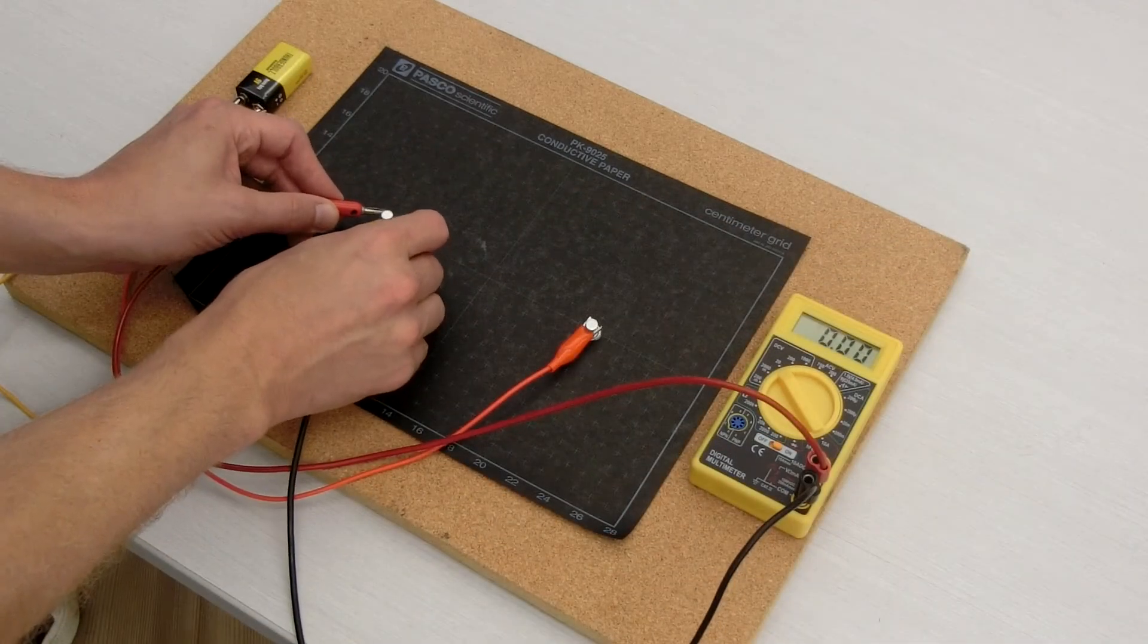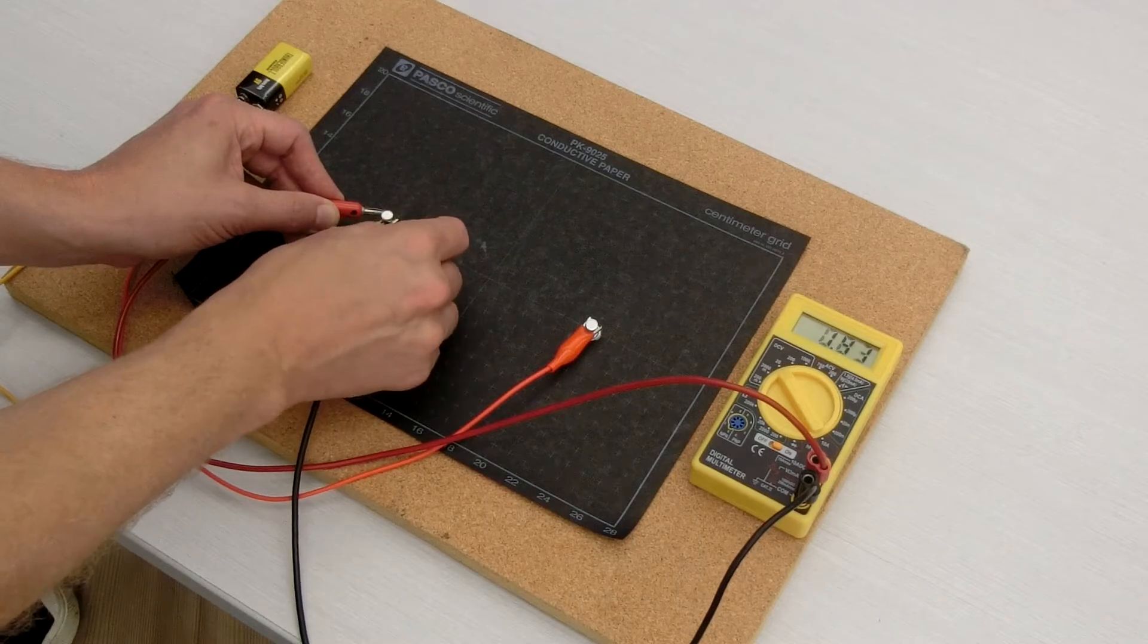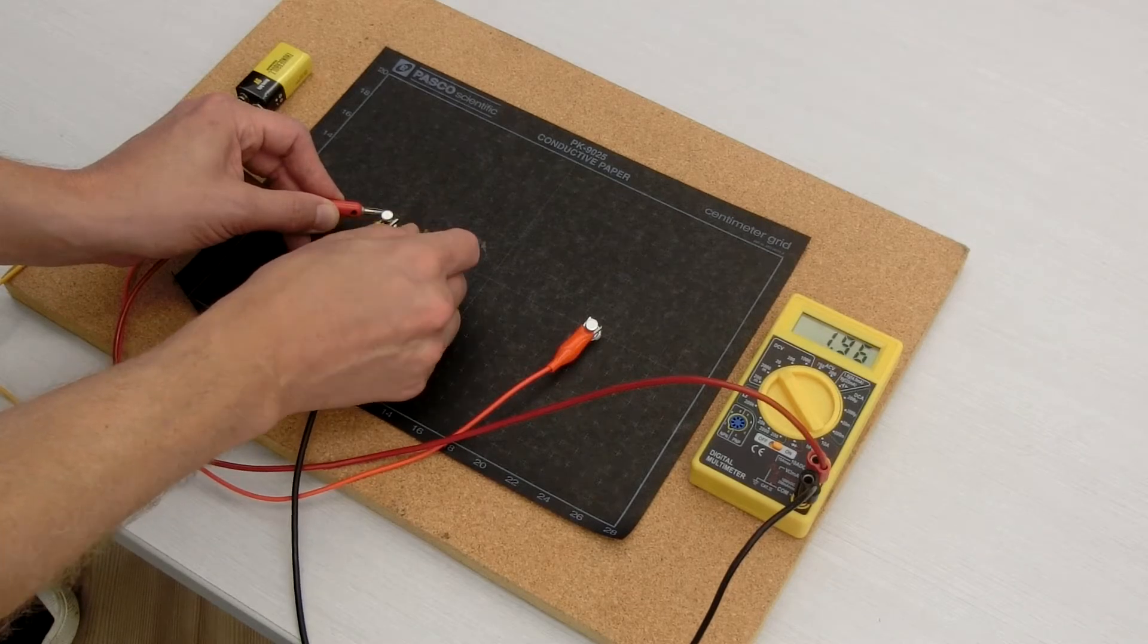Use the multimeter to measure the voltage between one of the point charges and a series of points along a line connecting the two point charges.